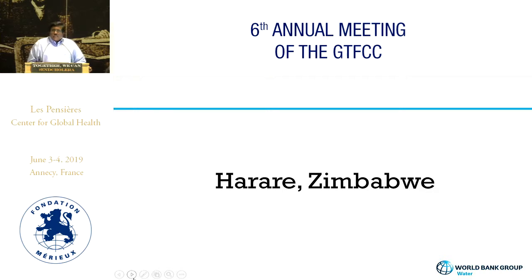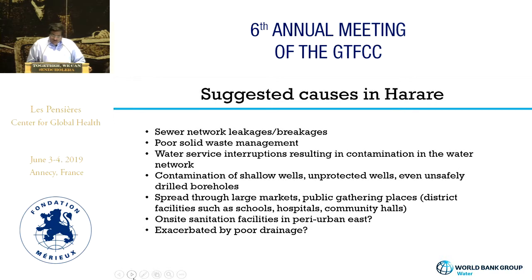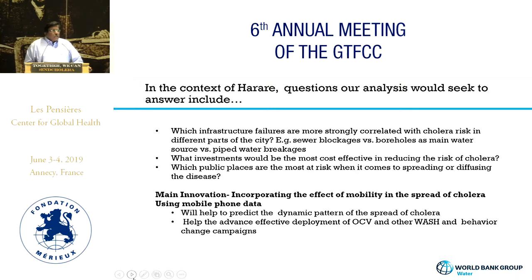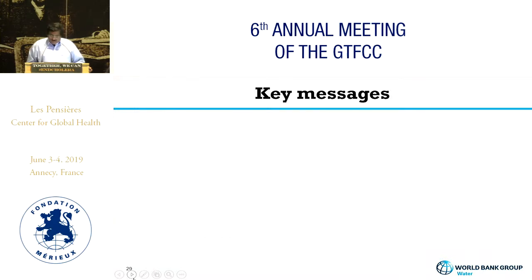In Harare the situation is slightly different, as there are many localized differences across cities. What we are doing differently here is trying to add mobility patterns to make the model more dynamic. The objective is to better understand how propagation of the disease will happen within the city, so that if we know how the disease is going to spread, we can provide ex-ante support in those areas or even administer cholera vaccines in advance. We are still continuing the work on that.